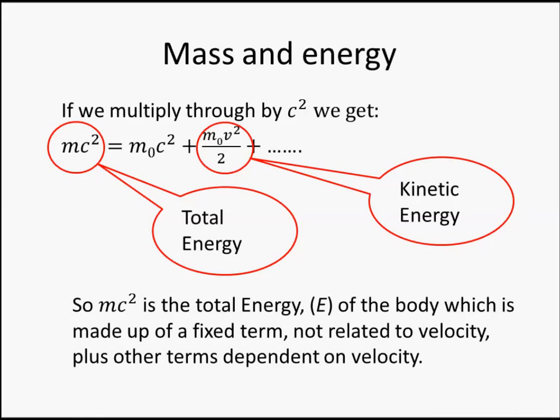So M c squared must be a total energy, and it's made up of two parts. M v squared over 2, which we know is the energy due to motion. And then there is a new part, which we never knew was there before, and which is there whether the body is moving or not. And that is M0 c squared. Does that look familiar?